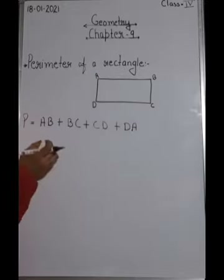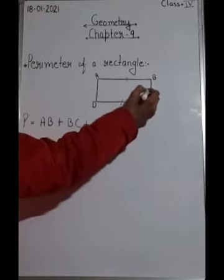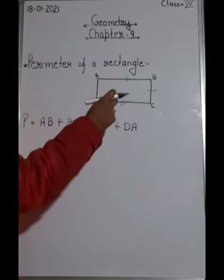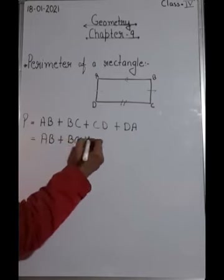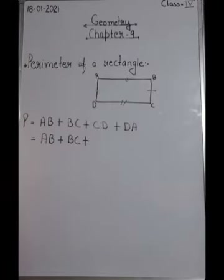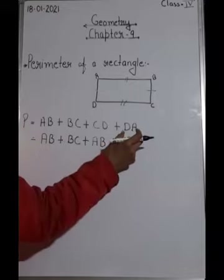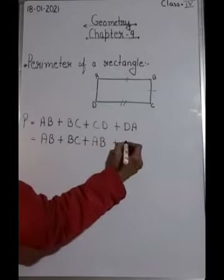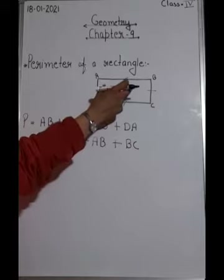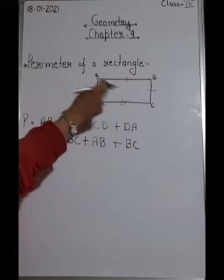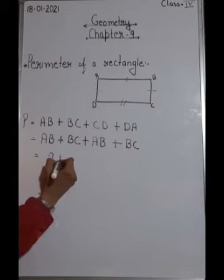The opposite sides of a rectangle are equal, so AB equals DC and AD equals BC. I can write AB + BC, then replace CD with AB (since CD equals AB), plus DA - replacing DA with BC (since DA equals BC). So we get: AB + BC + AB + BC. That gives us two AB plus two BC.